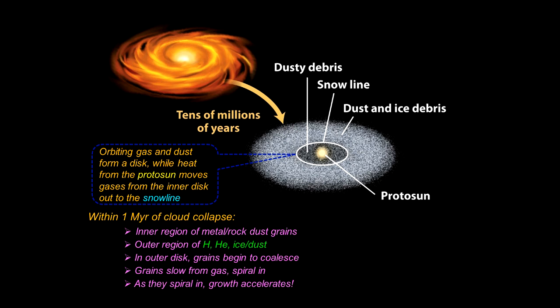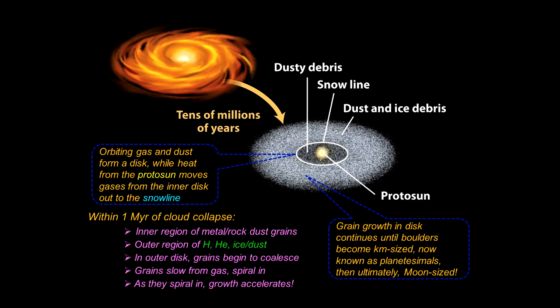Those particles of dust — those little grains — start colliding into each other and coalescing together, getting a little bit larger. They plow through the gas, which produces friction causing them to slow down and spiral in. As they spiral in they interact with other grains, smashing into them, and the grains get larger and larger. There's an accelerated growth process: pretty soon those grains have grown into boulder size and then even kilometer-size objects, which are now called planetesimals. Ultimately they form planetesimals the size of our moon — the significant raw materials that produce the planets.